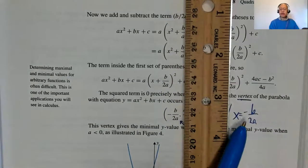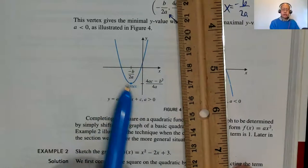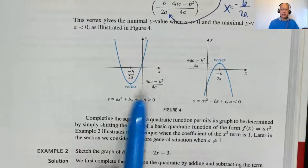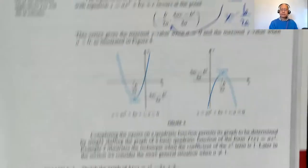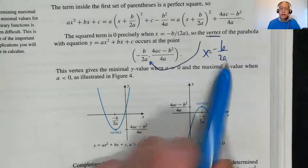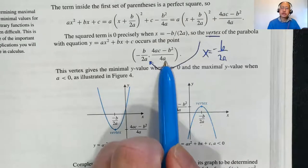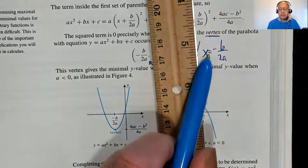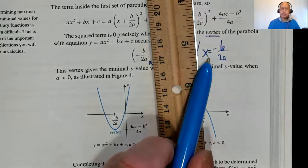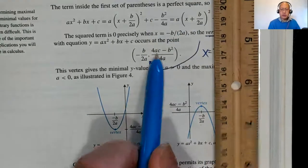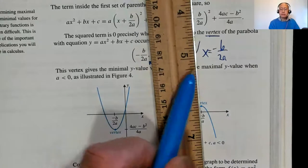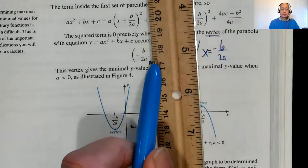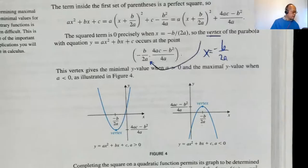To find the Y-coordinate of the vertex, just plug the X-value back into the original equation — don't use the complicated formula for it. So on your cheat sheet: vertex X-coordinate is −B over 2A, then plug in to find Y. That's much more intuitive than memorizing the Y-coordinate formula separately.